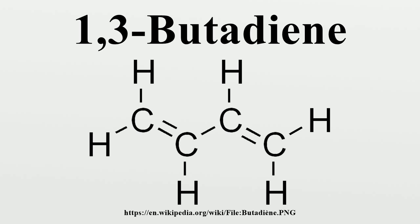Butadiene is typically isolated from the other four-carbon hydrocarbons produced in steam-cracking by extractive distillation using a polar aprotic solvent such as acetonitrile, N-methylpyrrolidone, furfural, or dimethylformamide, from which it is then stripped by distillation.